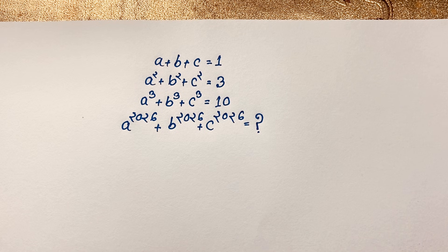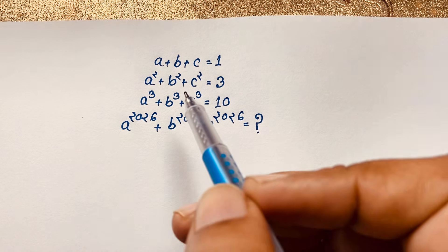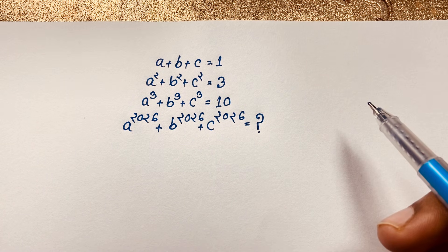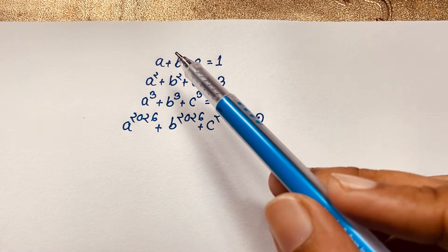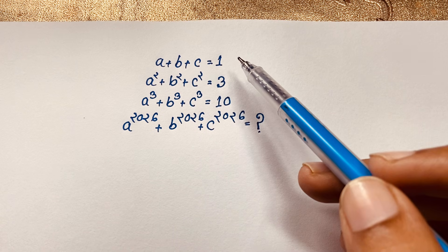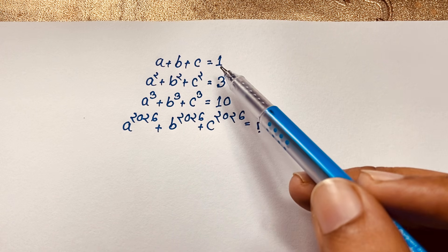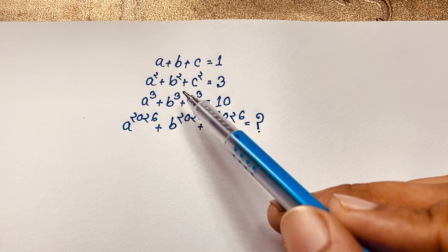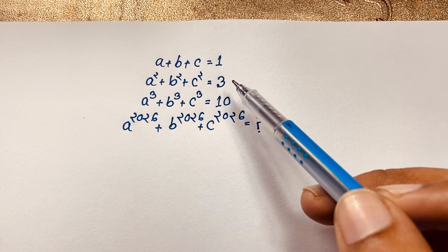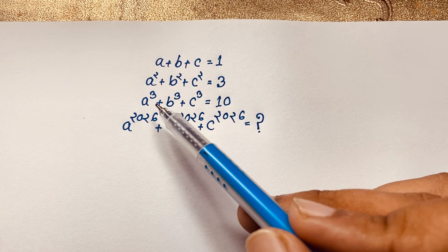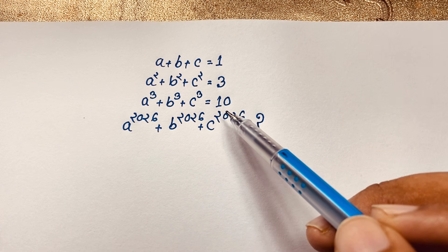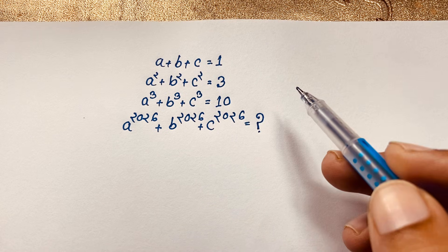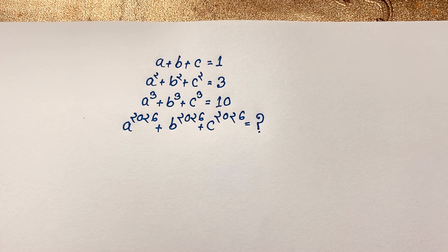Hello everyone, welcome to Rasha's classroom. In this video, we have solved an interesting maths Olympiad question: a plus b plus c is equal to 1, a squared plus b squared plus c squared is equal to 3, a cubed plus b cubed plus c cubed is equal to 10. Find a to the power 2026 plus b to the power 2026 plus c to the power 2026. How do we solve this interesting maths Olympiad question?